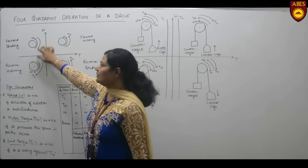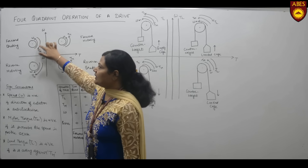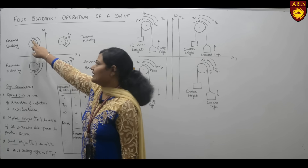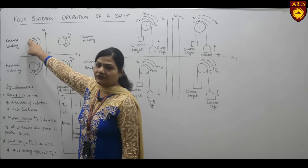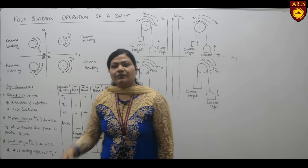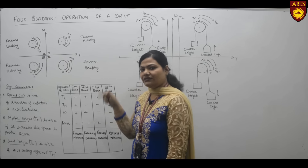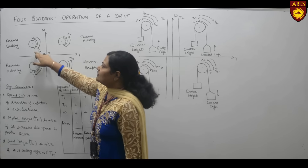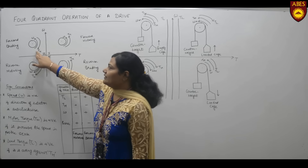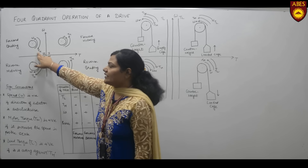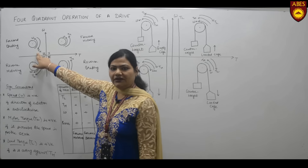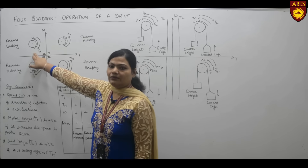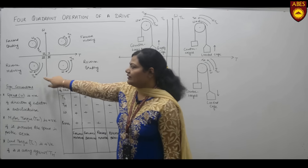In the second quadrant, that is the forward braking mode: the speed of the motor is in the anticlockwise direction so it is taken as positive, but the motor torque is in the clockwise direction so it is negative. Therefore in the second quadrant, power is negative, so it is a forward braking mode.